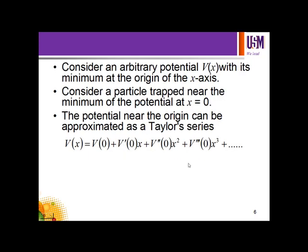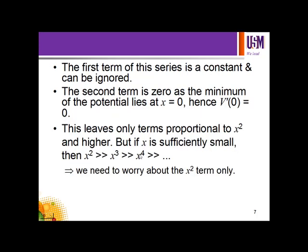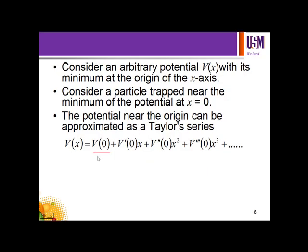Consider an arbitrary potential V(x) with its minimum at the origin. Consider a particle trapped near the minimum of the potential at x equal to 0. The potential near the origin can be approximated as a Taylor series: V(x) = V(0) + V'(x) + (1/2)V''x² + (1/6)V'''x³ + ... This is the Taylor series for the potential.